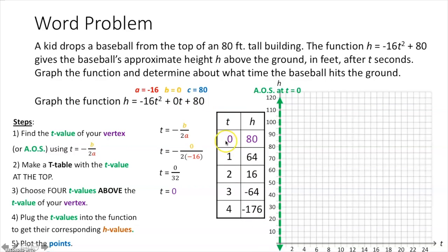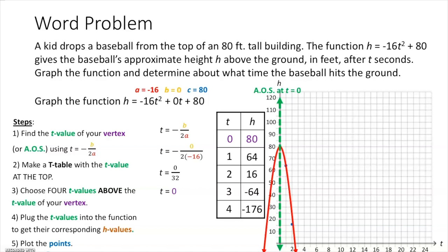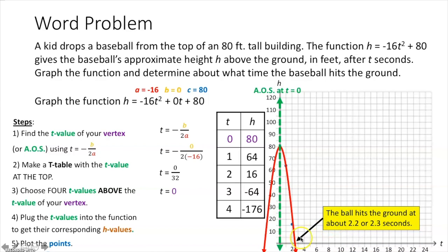We plot points (0, 80), (1, 64), (2, 16) — the next two are off the graph. Drawing the parabola, we want to find when the baseball hits the ground, which is when h equals 0. Looking at the graph, it crosses the t-axis at about 2.2 or 2.3. So after approximately 2.2 to 2.3 seconds, the ball will hit the ground.